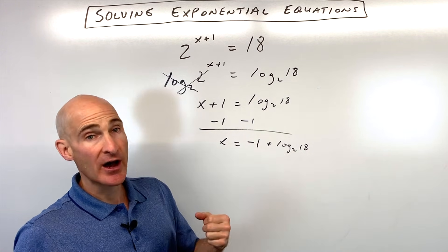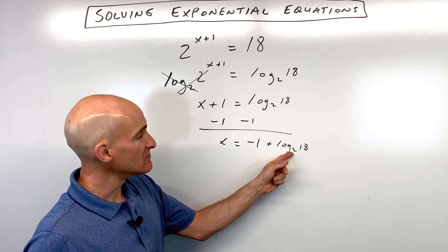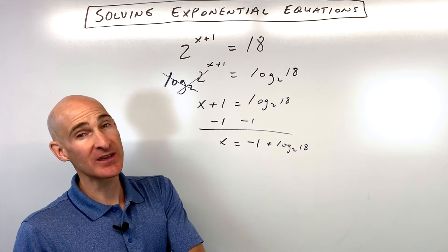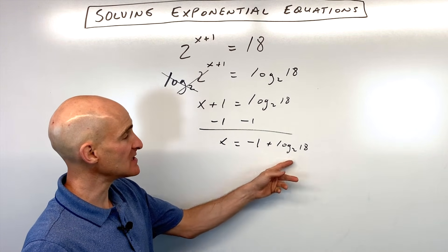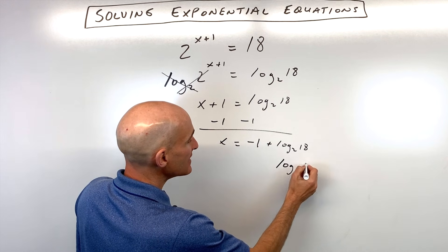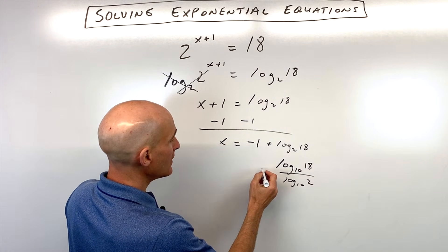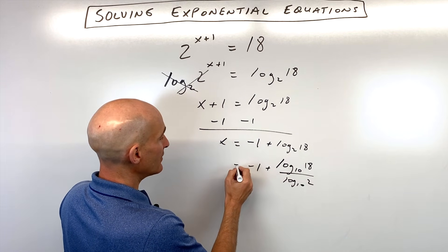Now you can go to your calculator and simplify. Some calculators don't have the ability to take log base 2. They only have log base 10, that's the common log, or log base e, that's the natural log. So you can write this as log base 10 of 18 over log base 10 of 2, and then add the negative 1.